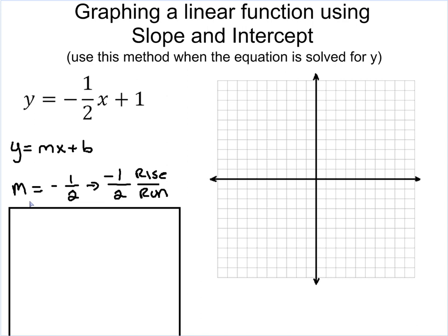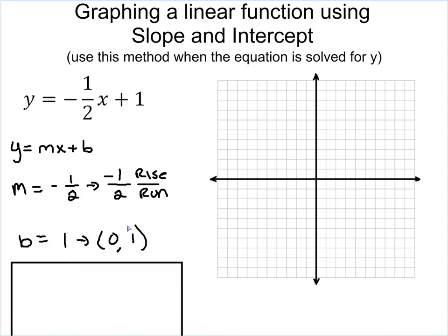In this case, however, my slope, or m, is negative 1 half. So I have negative 1 as my rise, and 2 is my run. It already has a fraction, so I didn't have to worry about changing it to a fraction. And b, again, is 1. So in this case, it's 0, 1.